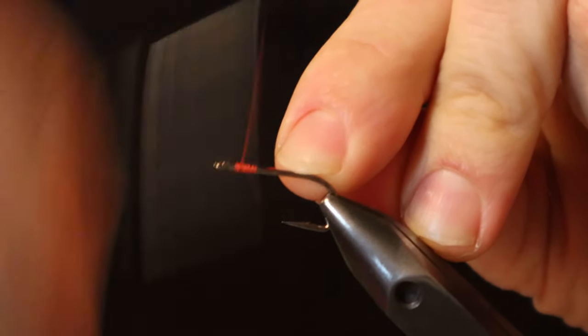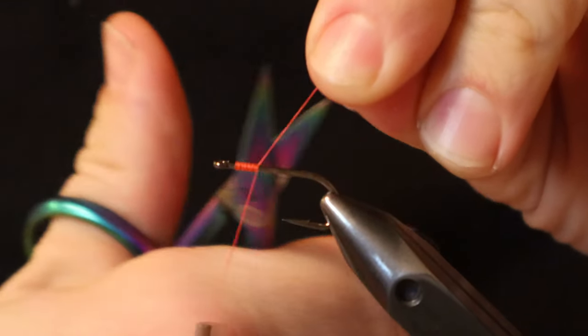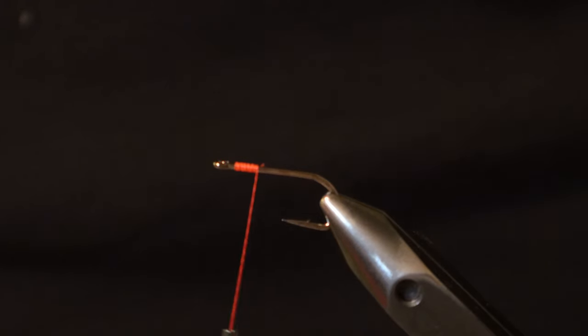I'm going to start by putting down a good little thread base for our dumbbell eyes right at the front of the hook there. You want to make sure it's pretty solid so that the eyes won't spin.